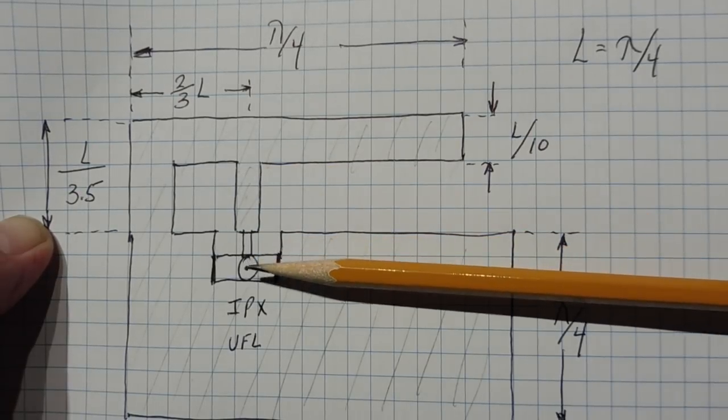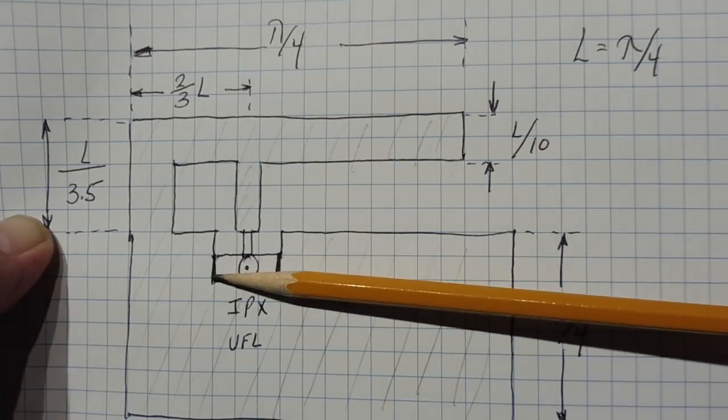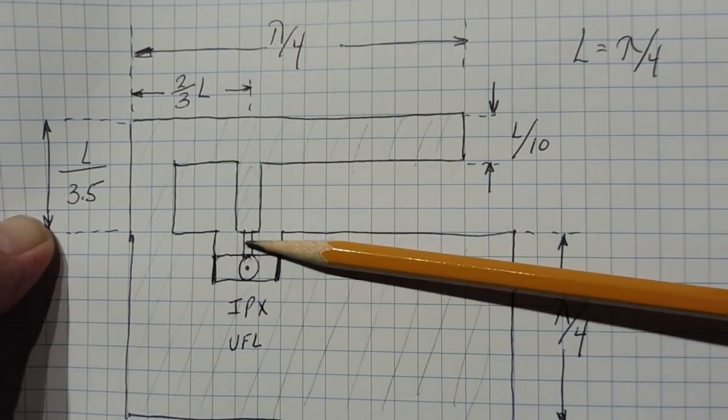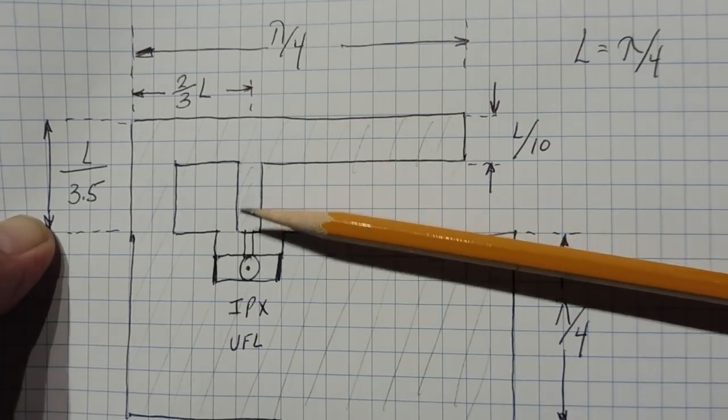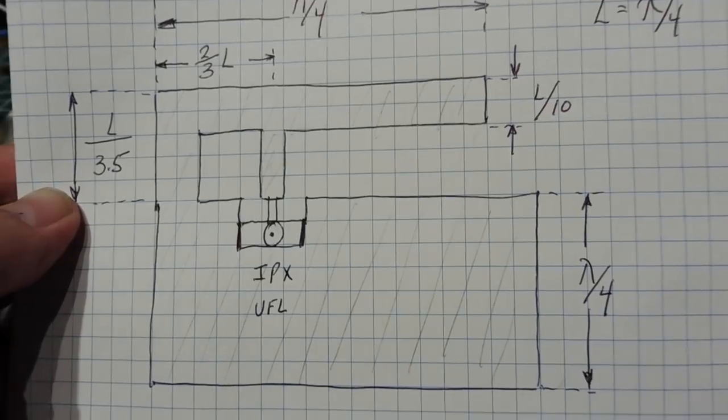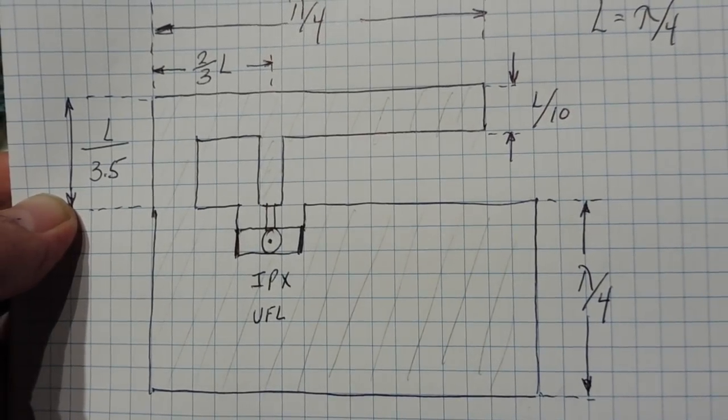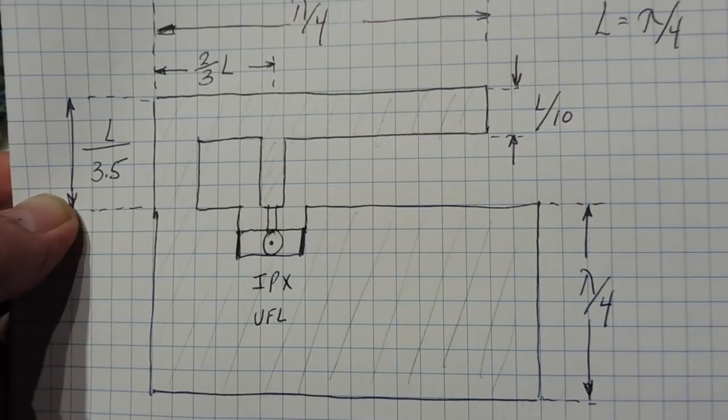And here's our input connector. So we could solder on an IPX connector. So the edges here would be soldered into the ground plane. And the center conductor would be fitted up to the feed point. So it's a very simple PC board antenna. Easy to make, cheap to make, and easy to tune. So this is another example of an antenna for a LoRa radio.